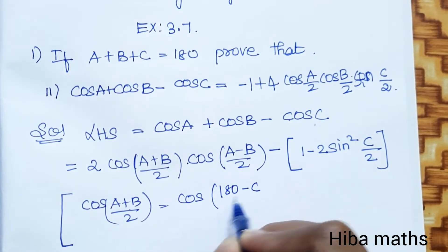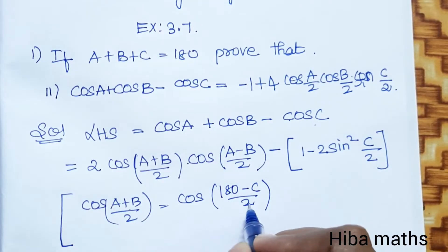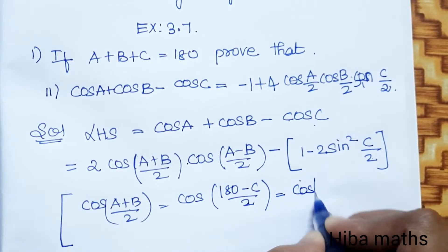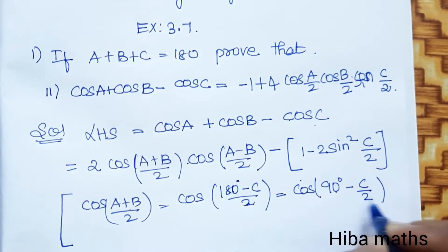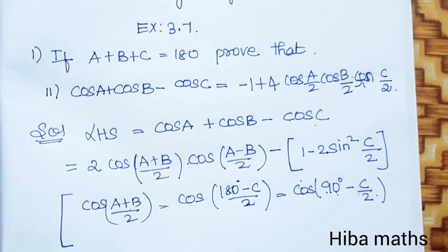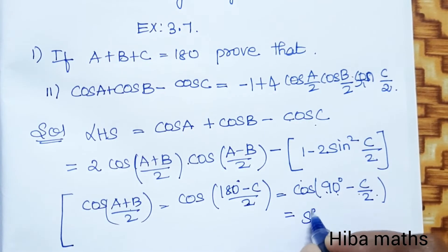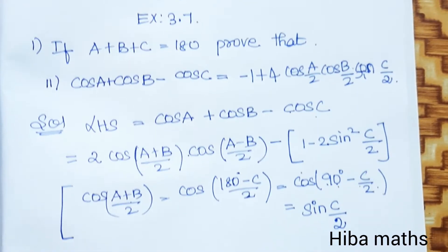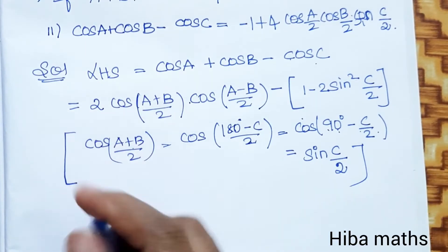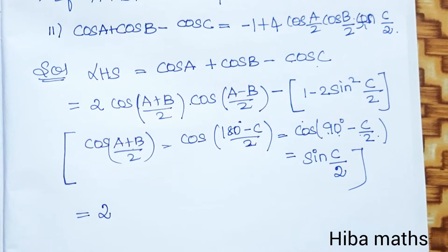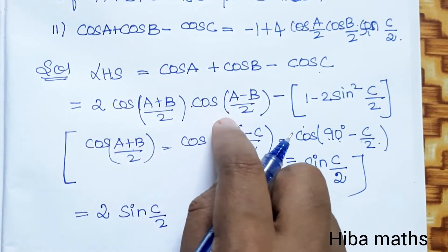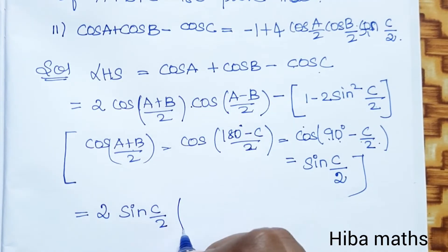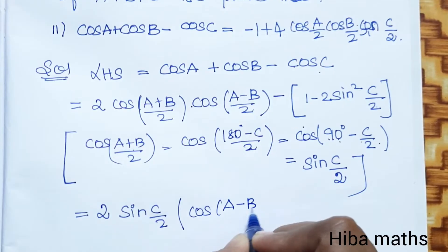So cos((A+B)/2) becomes cos((180 minus C)/2). Dividing 180 by 2 gives 90 degrees, so this becomes cos(90 degrees minus C/2), which equals sin(C/2). So the next line becomes 2 times sin(C/2) times cos((A-B)/2).